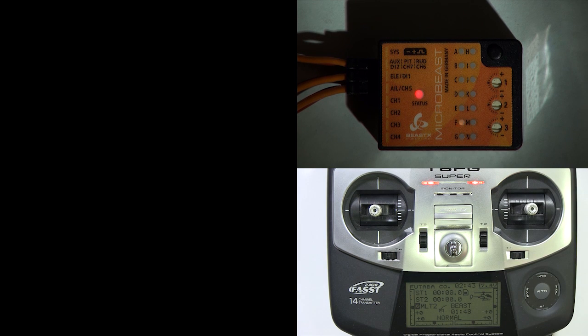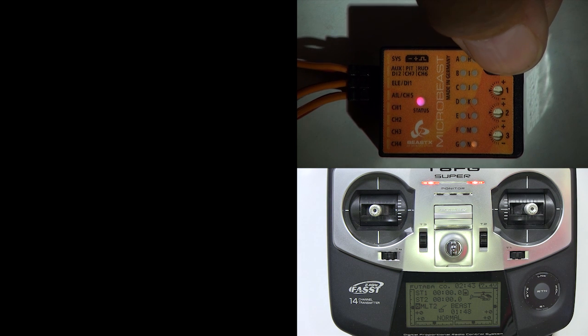We're going for the red light. Turn on your transmitter then the Microbeast, let it initialize. Hold down the button until the A light goes solid, then push the button a few times until the H light is lit.